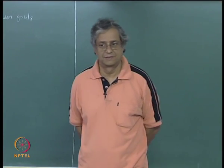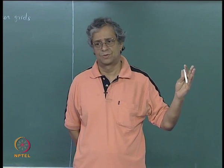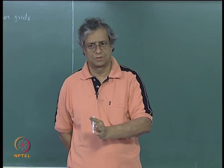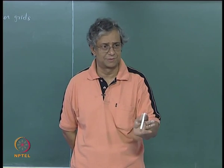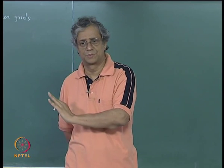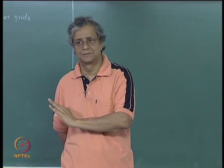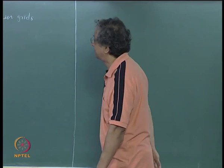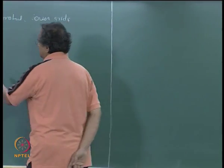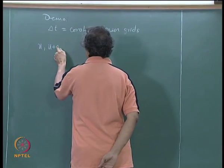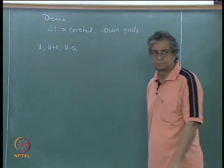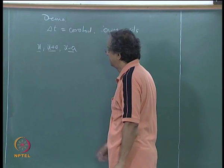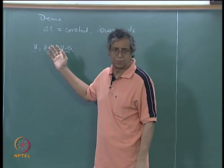The other thing we saw was that waves were propagating. Compression waves, not necessarily corresponding to u plus a, were propagating at higher speeds one way, and rarefaction waves were coming in the opposite direction, taking more time because they propagate at something like u minus a. So the characteristics are u, u plus a, and u minus a.